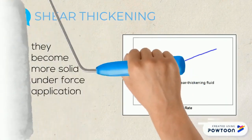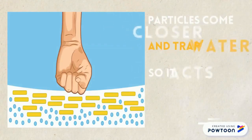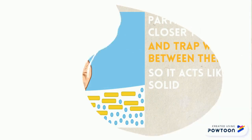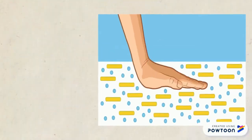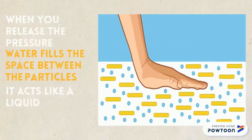As you observed in the experiment, when you hit the mixture with your hand, particles come closer together and trap water between them, so the mixture behaves like a solid. Once you release the pressure, water fills the space between the particles again and the mixture behaves like a liquid.